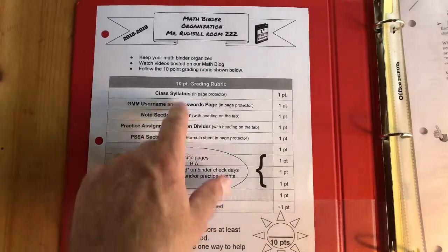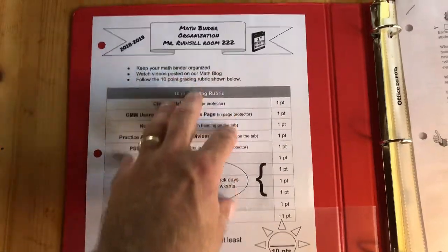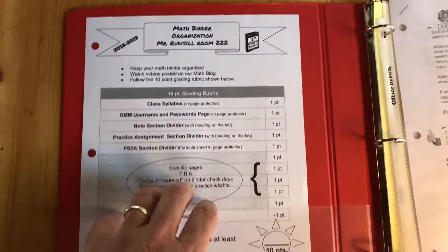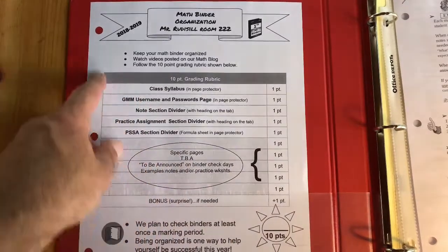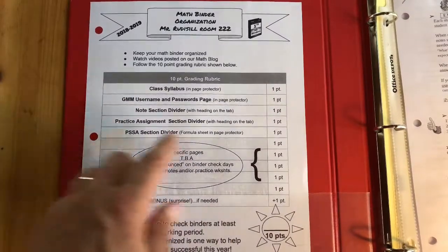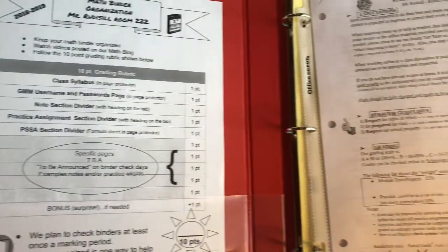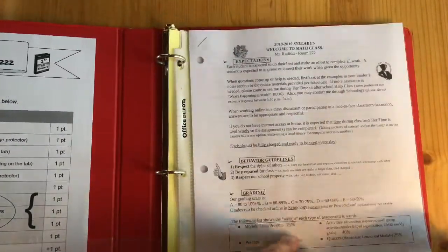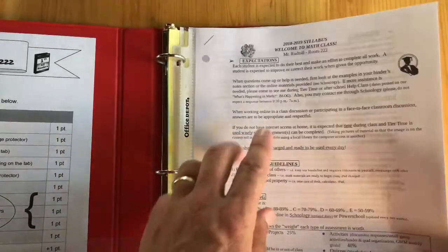If you have a pouch, this is where you want to keep your math binder organization page. If you do not have a pouch like this, actually put the paper into the three rings. Your syllabus should be first.